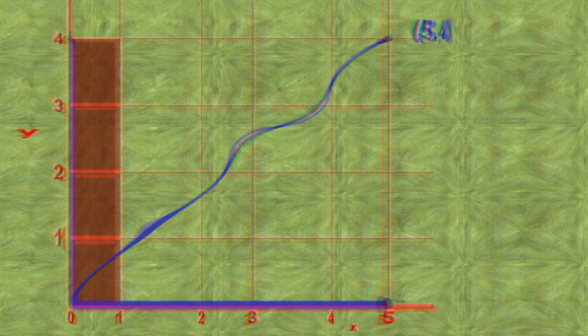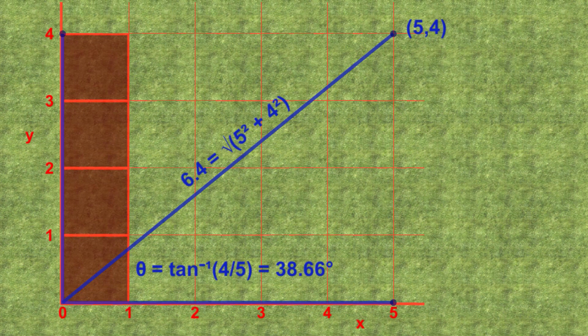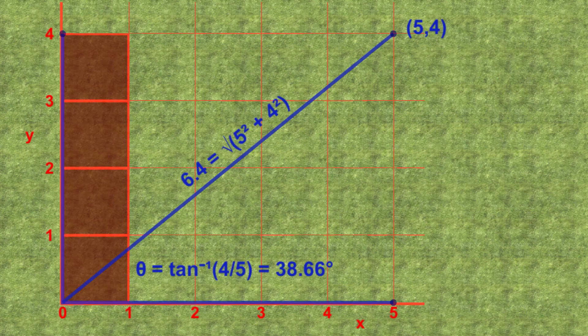In my video on the Pythagorean theorem, I explain how to calculate the length of the hypotenuse of the triangle. Feel free to watch that video if you don't know how to get to 6.4. An alternative way to get to the point x equals 5, y equals 4, is to first turn in the correct direction and then pace out the length of the hypotenuse. The angle can be calculated using the trigonometric function inverse tangent of the lengths of the opposite side over the adjacent side. We're not going to go into the detail, but the angle is 38.66 degrees in this case.